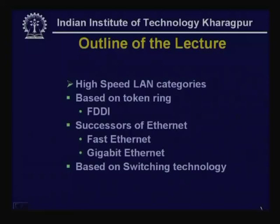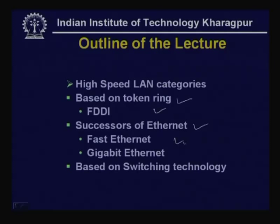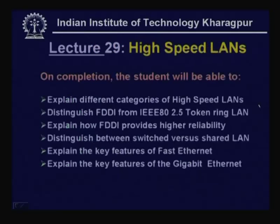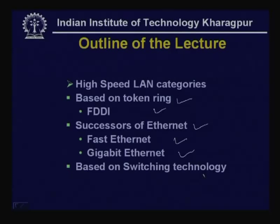Here is the outline of this lecture: high speed LAN categories. High speed LANs can be implemented based on token ring — essentially an extension of token ring known as FDDI. Then the high speed LANs based on successors of Ethernet — we shall discuss in detail two technologies: fast Ethernet and gigabit Ethernet. And another alternative based on switching technology has also led to high speed local area networks.